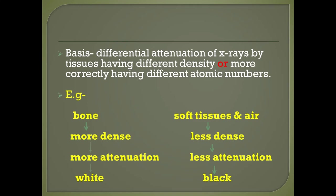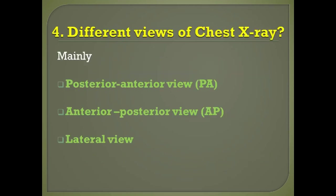For example, bone is a more dense tissue, so more attenuation — it will look white. Soft tissues and air are less dense, less attenuation — black in color. Question number four: what are the different views of the chest X-ray? Chest X-rays are most commonly taken in the PA view, which is the standard view. For ICU patients who cannot stand, we take it in the AP view. The other view taken is the lateral view.